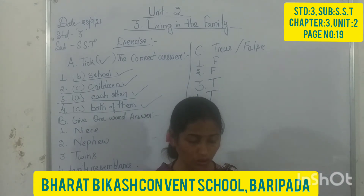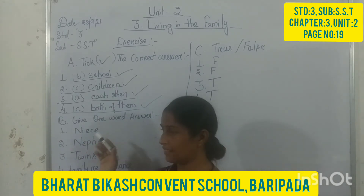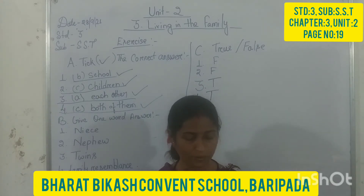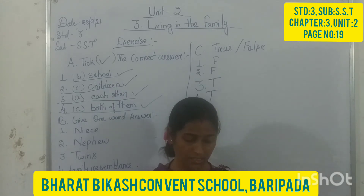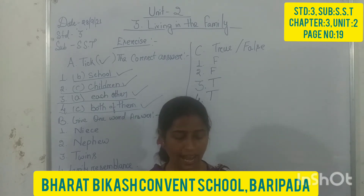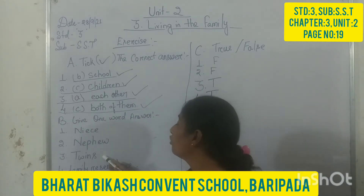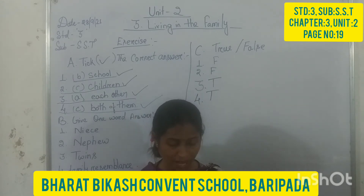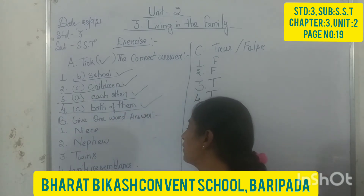Once again I repeat it. The daughter of my parents who is a sister or brother to my parents is me — niece. Second: the son of my parents who is a sister or brother to my parents is 'nephew.' Third word: two children born almost at the same time to the same parents is 'twins.' Fourth word: the members of the family having some similar features or habits is known as 'family resemblance.'